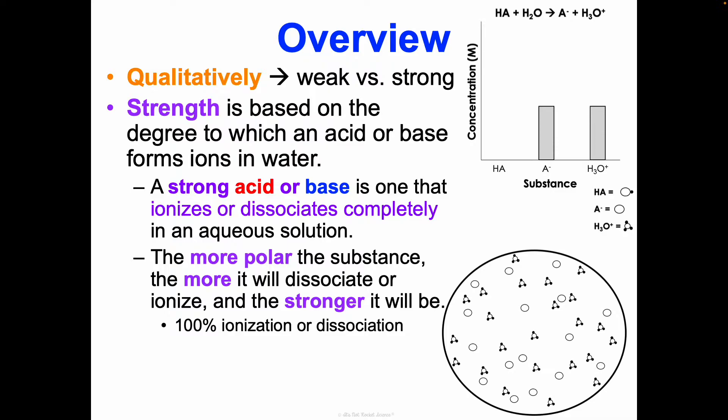With a strong acid or base, we should see 100% ionization or dissociation. Look at this graph. These two models here are really helpful to represent this. Remember, I gave you a general equation before of an acid. Acids typically have that hydrogen on one side. When we put them in water, we see that they ionize.